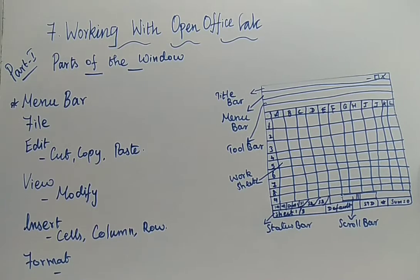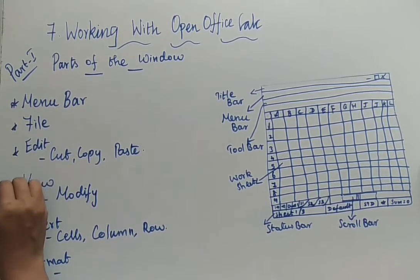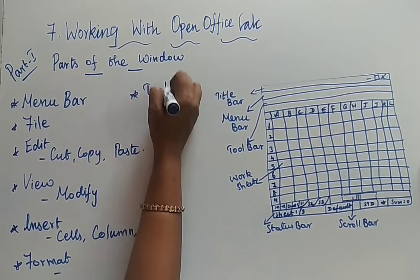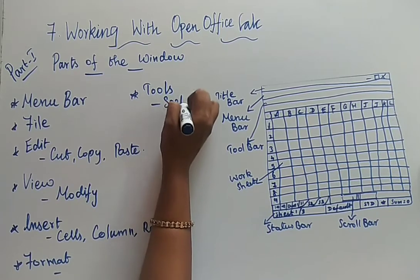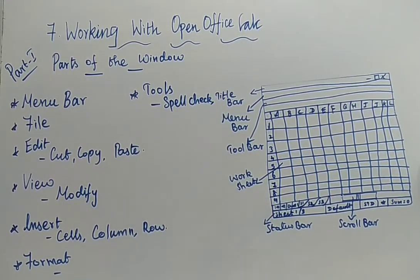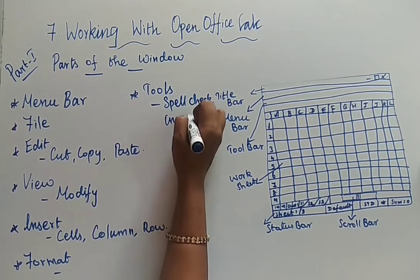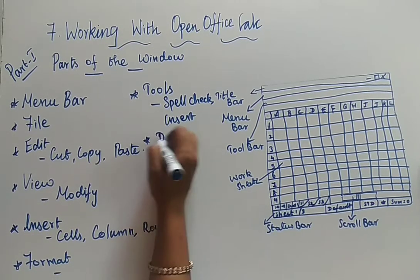And the next one is Tools. What this menu is going to contain? It is going to contain few things for your spell check, to protect the document, insert pictures — everything is seen under the Tools menu. And the next one is Data. This is going to contain the commands needed to manipulate the data.